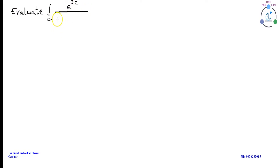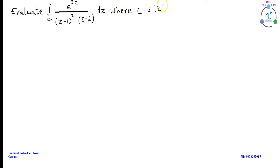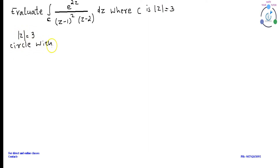Evaluate the integral of e raised to Z divided by (Z-1) whole squared into (Z-2) dz, where C is mod Z equal to 3, using Cauchy's residue theorem.